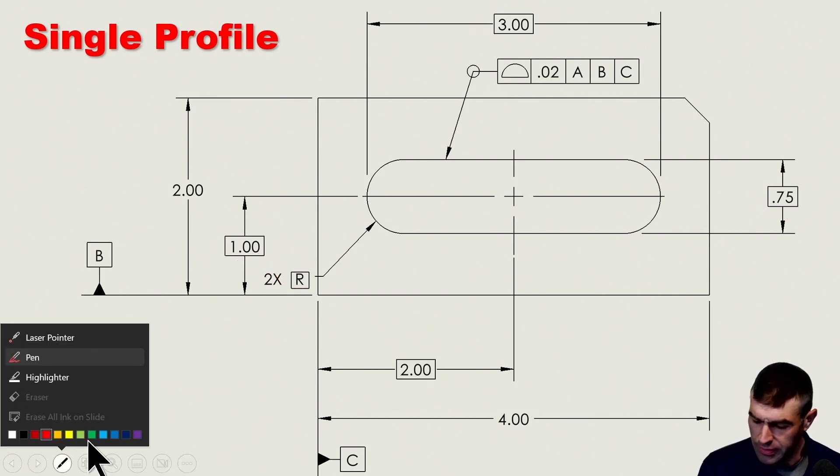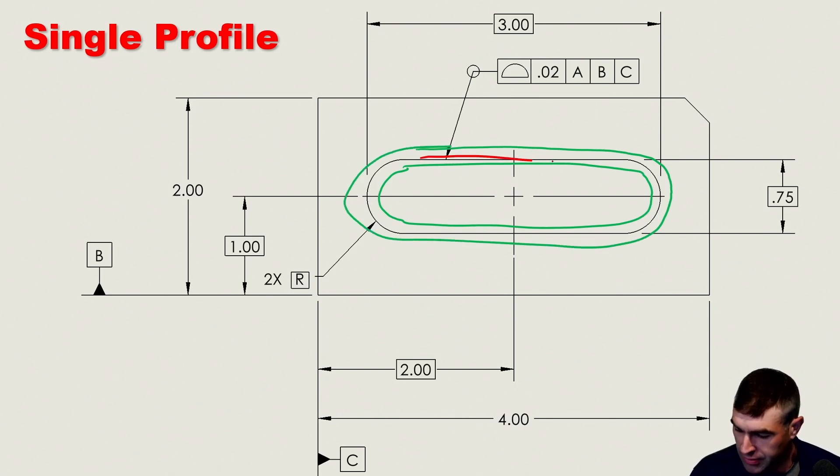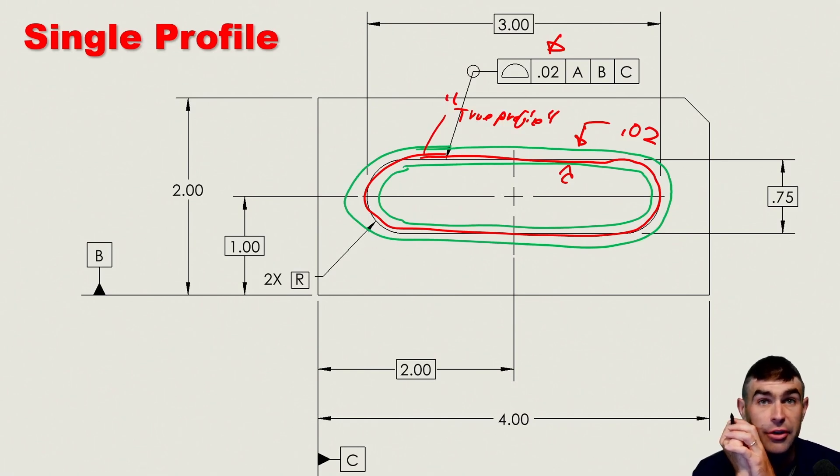We're locating it with basic dimensions from our datum reference frame. In this case, A, B, and C. Pretty straightforward there. And we're going to give the overall length of the slot and the overall height. So this is one of the three different ways to dimension a slot according to Y14.5. And, of course, we've got our radius called out as basic here. Our tolerance zone for this.